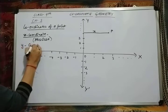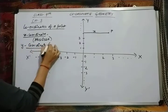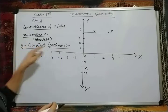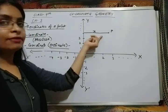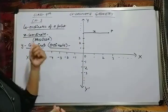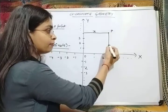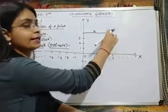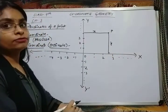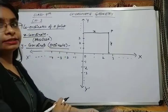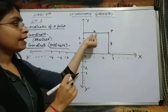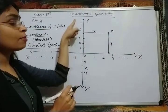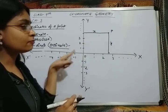The y-coordinate is also known as the ordinate. For the x-coordinate we found the perpendicular distance from the y-axis. For the y-coordinate, we find the perpendicular distance of the point from the x-axis. Suppose this distance is y units, so y is the y-coordinate of the point. So: x-coordinate is also known as abscissa — perpendicular distance from y-axis. Y-coordinate is also known as ordinate — perpendicular distance from x-axis.